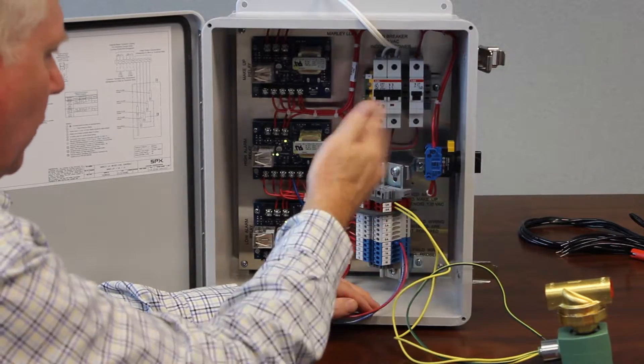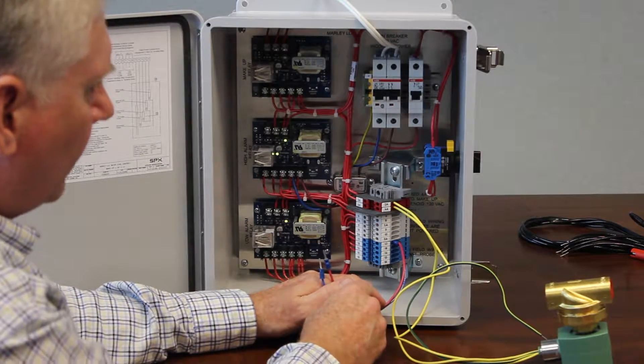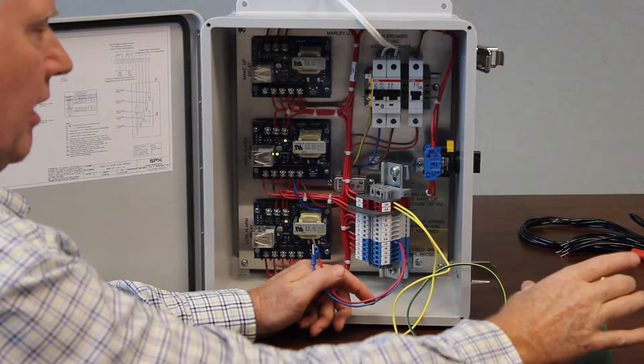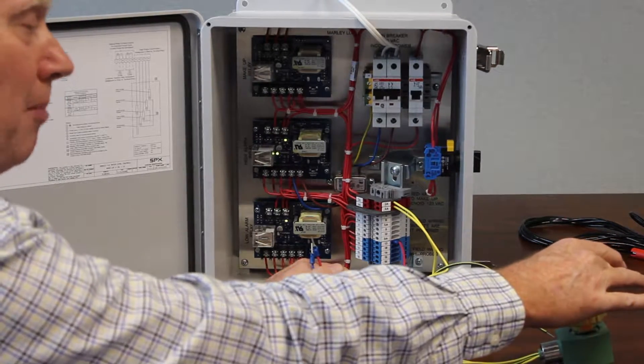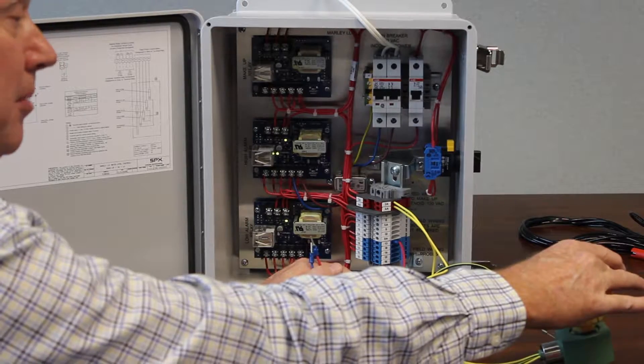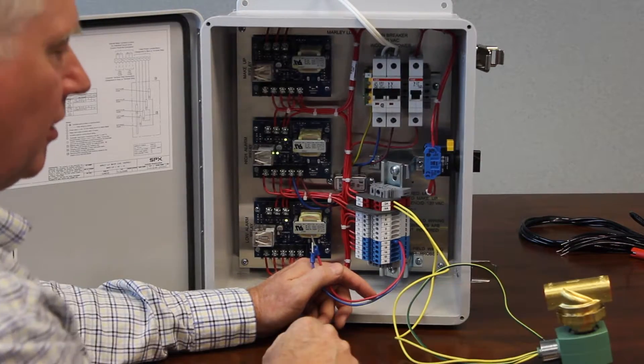So the makeup solenoid is wired in there, got my jumpers in my hand right here. Here's the inlet and outlet on the solenoid. This would be someplace in a building, or it might be at the tower, but a lot of times they're in the building, and it's in a piping circuit right here.